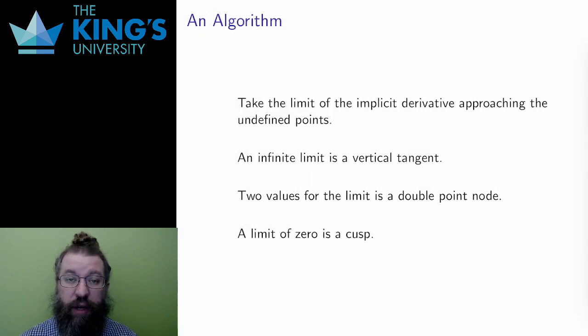Then I want to classify the potential singularities. Are they vertical tangents, which are not singularities at all? Are they double point nodes, or are they cusps? And I can do this by taking the limit of the implicit derivative approaching the undefined points. This is where a domain can matter. The limit might only be from one side, from the left or the right, if there is a domain restriction.